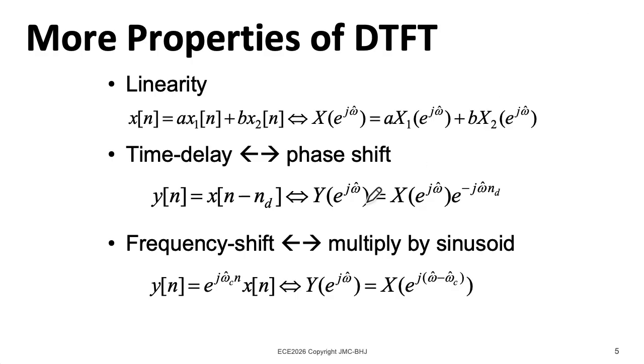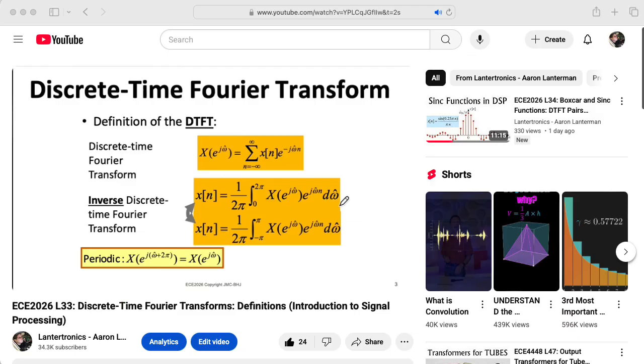Before we close out, I wanted to point out some quasi-symmetry you've probably already noticed. A shift in time corresponded to a multiplication by a complex exponential in frequency, and a shift in frequency corresponded to a multiplication by a complex exponential in time. Now the symmetry is not exact. The shifts are both to the right, but the minus sign in the exponent up here contrasts with the plus sign in the exponent over here. This kind of quasi-symmetry shouldn't be terribly surprising if you spend some time staring at the forward transform and the inverse transform.